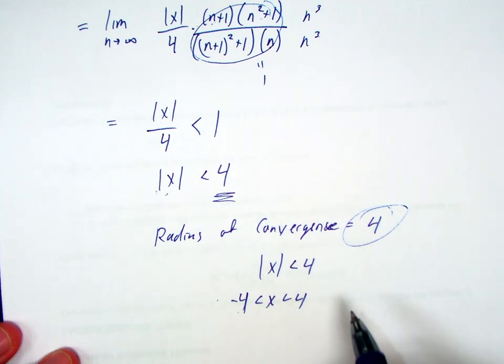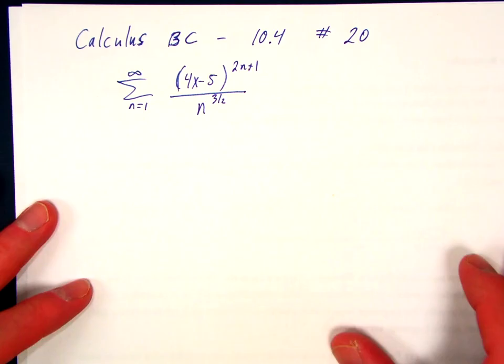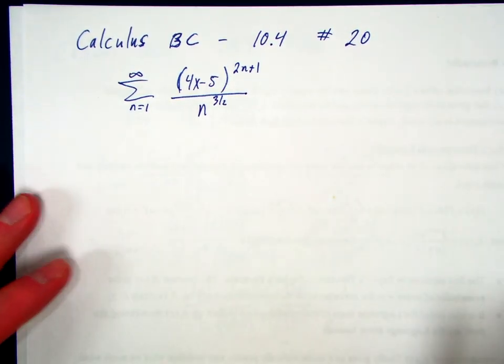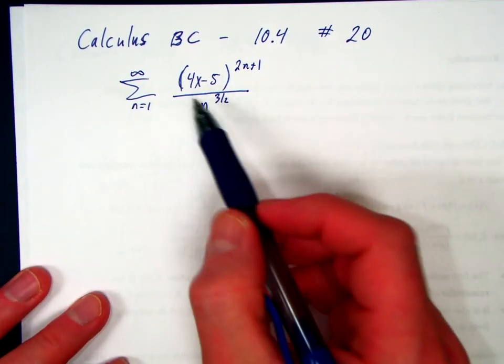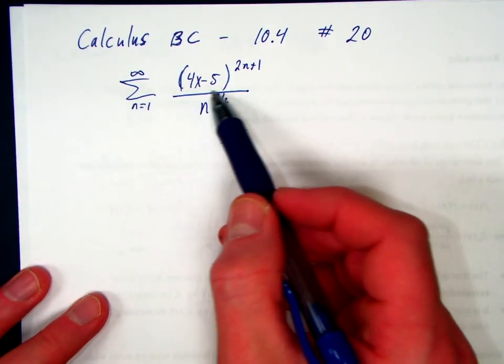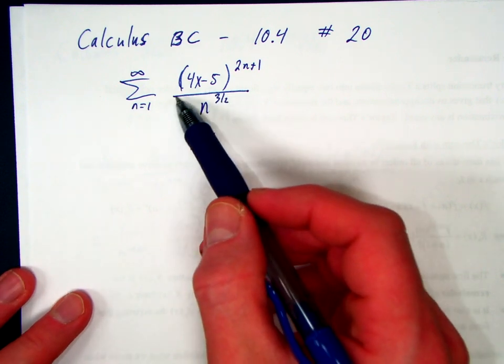So that was number 16. Let's go to number 20. And with number 20, I mentioned before, when there's a 4 in front of the x, you have to factor that out.